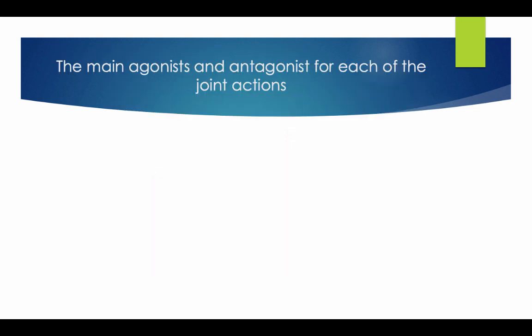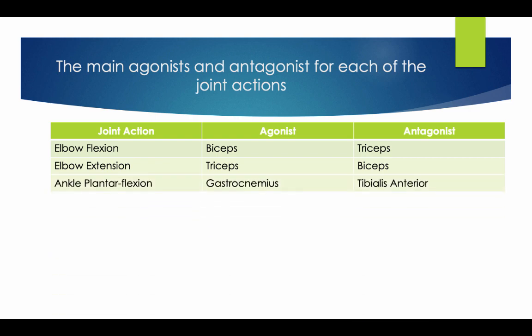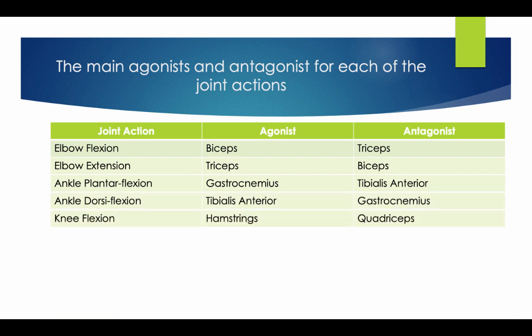The main agonists and antagonists for each of the joint actions will be shown in this diagram. For elbow flexion, the agonist is the bicep and the antagonist is the tricep. For elbow extension, the tricep is the agonist and the bicep is the antagonist. Ankle plantar flexion: gastrocnemius and tibialis anterior. Ankle dorsiflexion: tibialis anterior and gastrocnemius. Knee flexion: hamstrings and quadriceps. Knee extension: quadriceps and hamstrings.